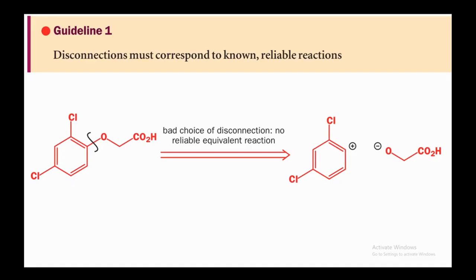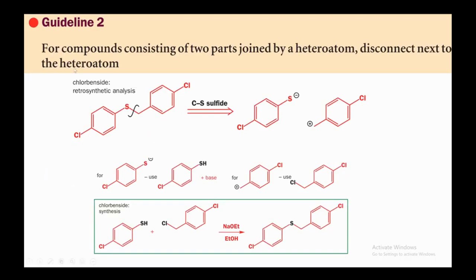Guideline number one: disconnections must correspond to known, reliable reactions. For example, if you disconnect from a bond that generates a positive charge on a benzene carbon and a negative charge on oxygen — the negative charge on oxygen is fine, but a positive charge on benzene is unusual. You'd need strong electron-withdrawing groups for nucleophilic substitution on benzene. Under normal conditions this is a very bad choice. Always disconnect from a position that leads to known, reliable reactions.